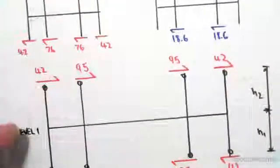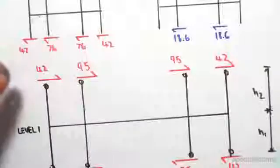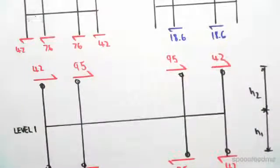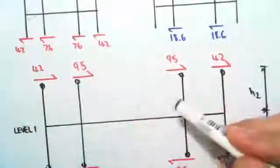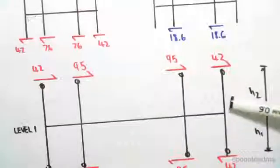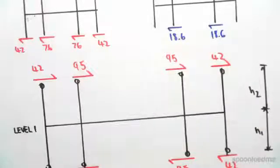Now a moment we know is just a force times a distance, so we're going to be finding the moments at these points over there. We're going to have to multiply this force by its distance and that force by its distance, so I've got h1 and h2.